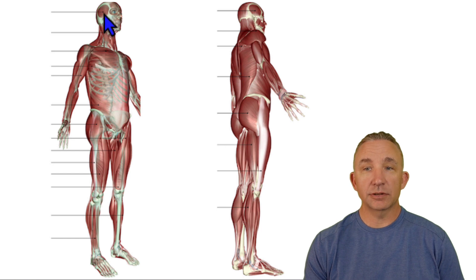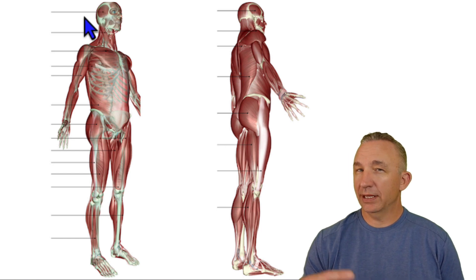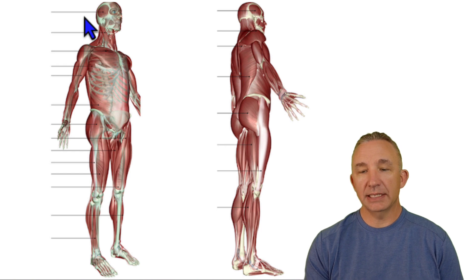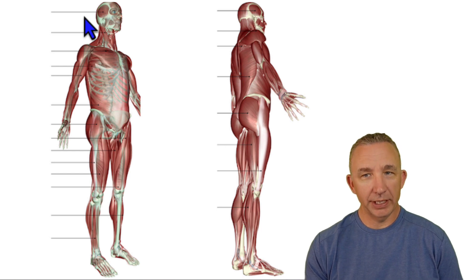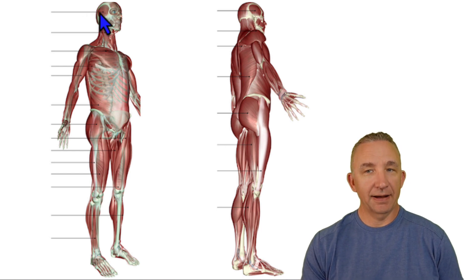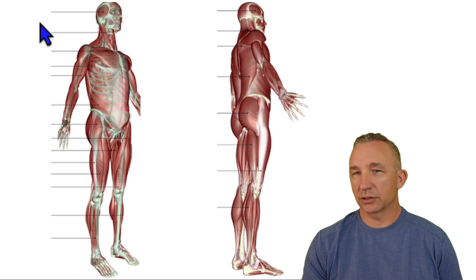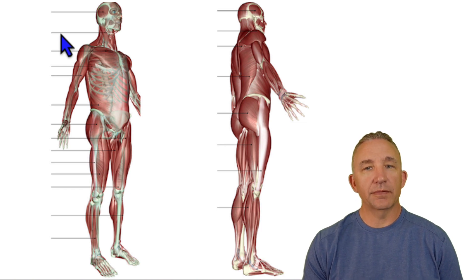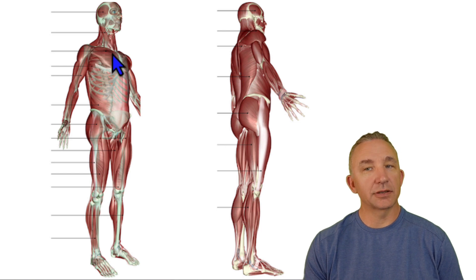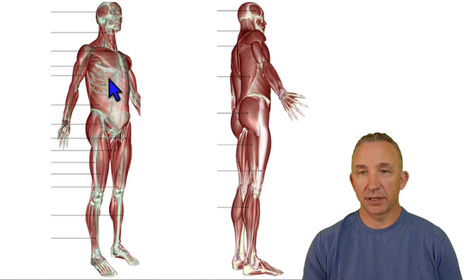As we look at the first part, this is temporalis. Temporalis is deep to auricularis superior, so you may see auricularis superior on some models — underneath that is temporalis, depending on the model or chart you're looking at. As we wrap down, one of our major muscles of the neck is sternocleidomastoid, because it goes from the sternum and clavicle up to the mastoid process to help with flexion of the neck.